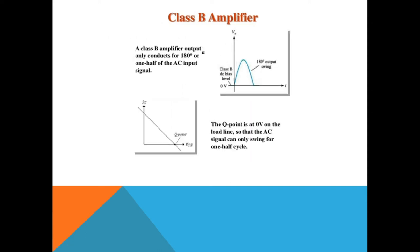Second is the class B power amplifier. In class B, the Q-point is adjusted in the cut-off region, or on the X-axis. Due to this, for the positive half cycle the transistor will be conducting, but for the negative half cycle the transistor will not conduct since the Q-point is in the cut-off region. During the positive half cycle, the transistor enters active mode and the amplifier conducts, but for the negative half cycle the transistor is in cut-off mode and will not conduct.